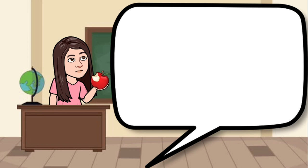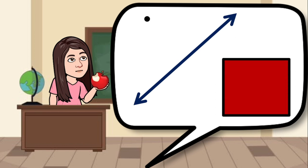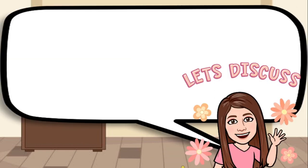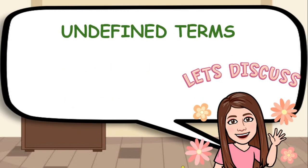Now, what do you call this one? Very good. So, this is a point. How about this one? Alright, this is a line. And lastly? Correct! This looks like a square. But why did I ask you this? It is because today, we're going to talk about undefined terms.